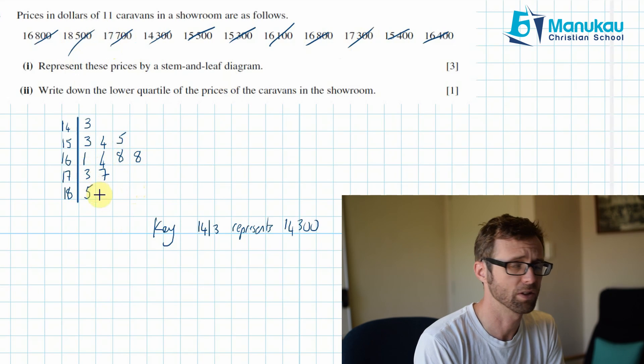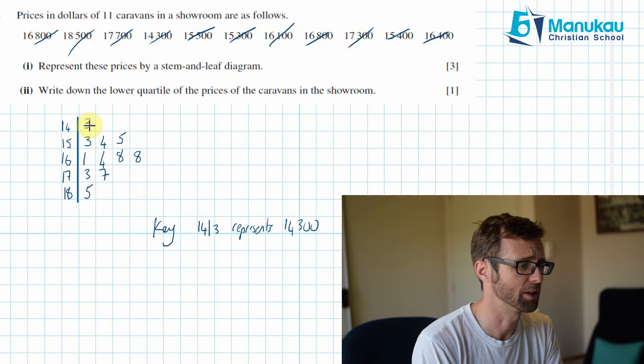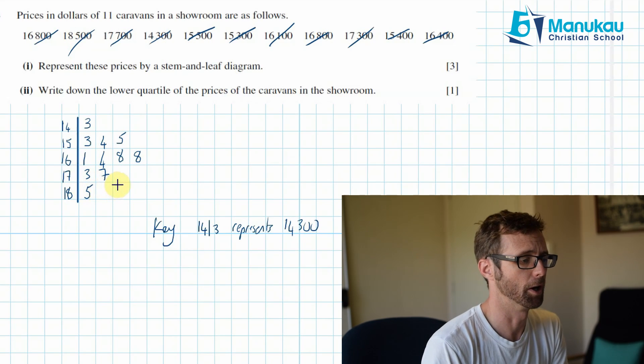I always like to do a little bit of a check because I stuff things up all the time. There's 11 caravans. Do I have 11 pieces of data? 1, 2, 3, 4, 5, 6, 7, 8, 9, 10, 11. Yes, I'm good to go. Okay.